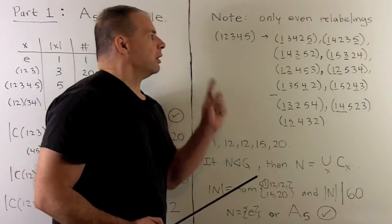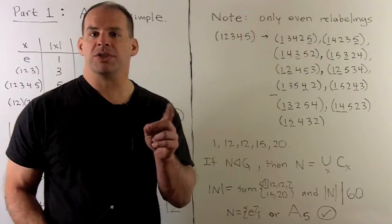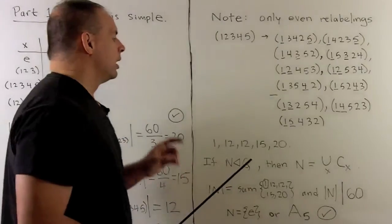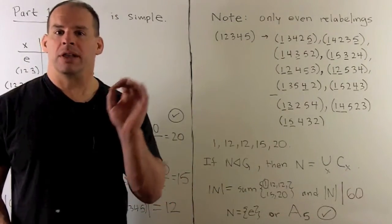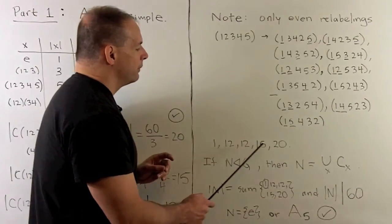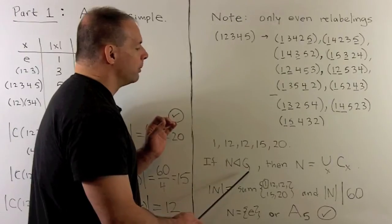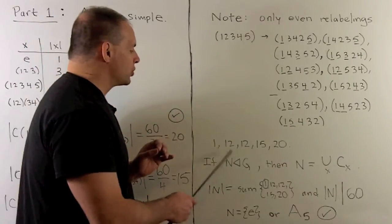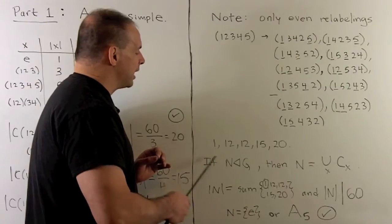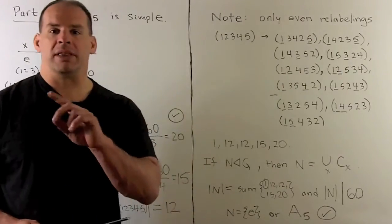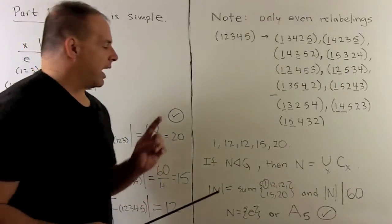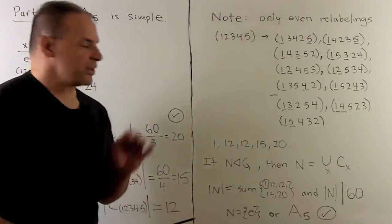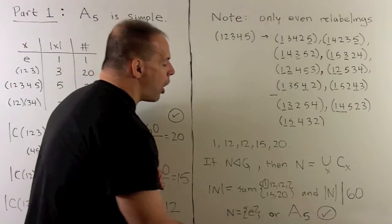The orders for the classes are going to be 1, 12, 12, 15, and 20. If we have a normal subgroup, it's going to be a union of disjoint conjugacy classes. So the order of our normal subgroup is some sum of these numbers, and since we have the identity, we must include the 1. That sum also has to divide 60. There's no way that works unless we have 1 or 60 itself, so we only have normal subgroups: the identity or all of A5.